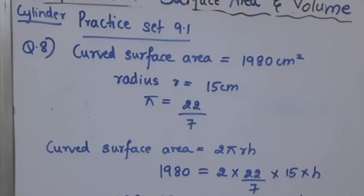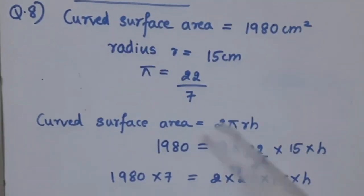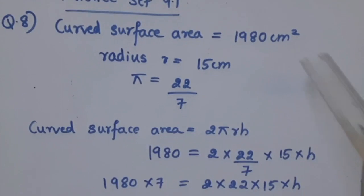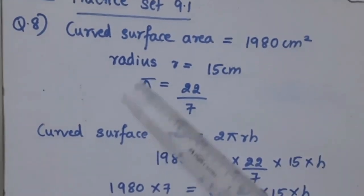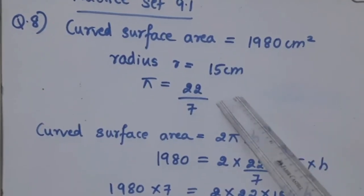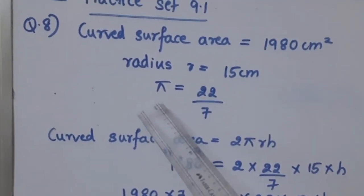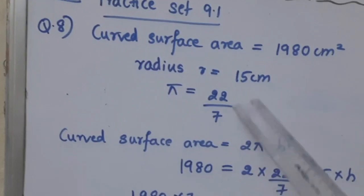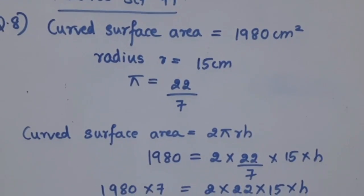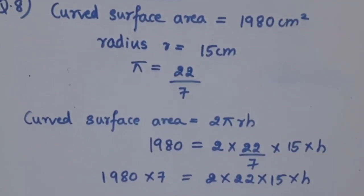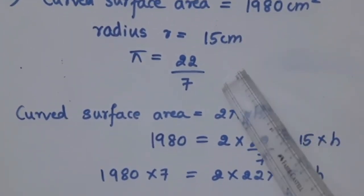Next question is also related to cylinder, practice set 9.1 Question number 8. The question is curved surface area of a cylinder is 1980 cm square, radius is 15cm. Therefore, find the height of the cylinder. Here they have given π. Value of π either you can take as 3.14 or 22 upon 7. You can use any of these two values. Here they have given 22 upon 7.